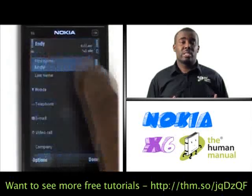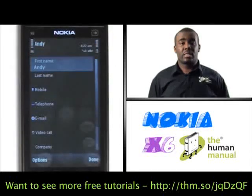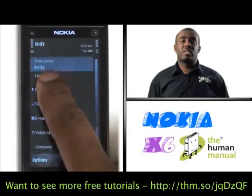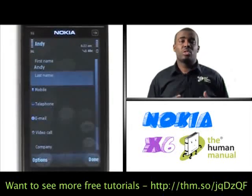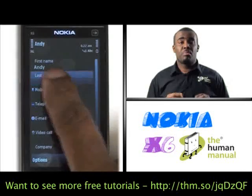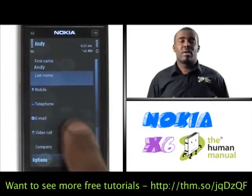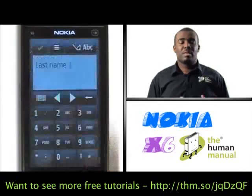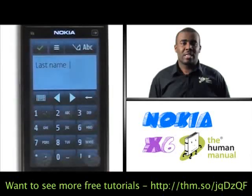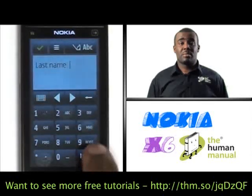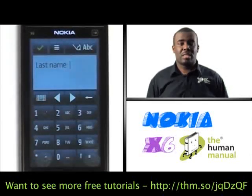Now you can enter your contact's last name. Just like you did with the first name field, you want to double tap this field to bring up your keypad. Once the keypad is up, type in your contact's last name and once complete, touch the green tick icon.